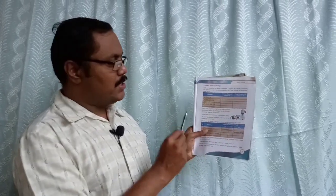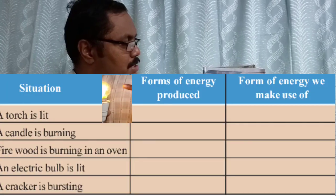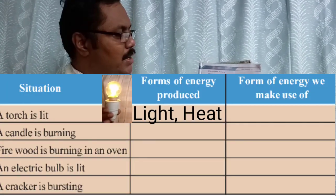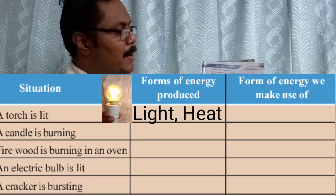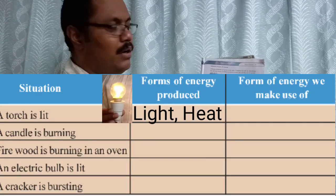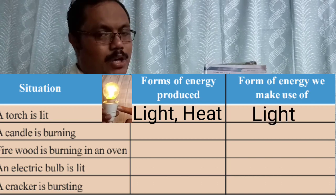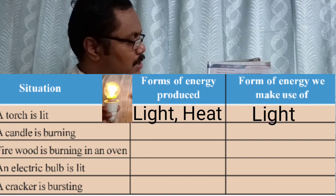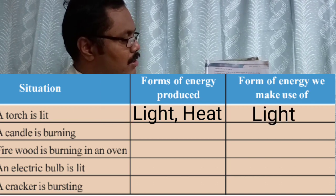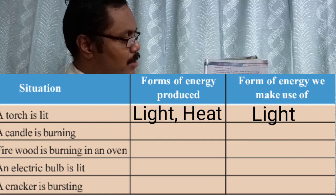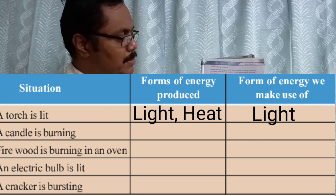The table shows: forms of energy produced and the form of energy we make use of. For example, when a torch is lit, we get both light energy and heat energy, but we need only light energy — we are using light energy. You have to complete this table in the same way.